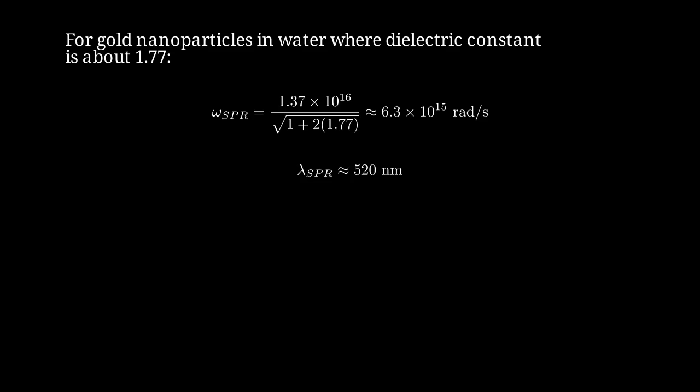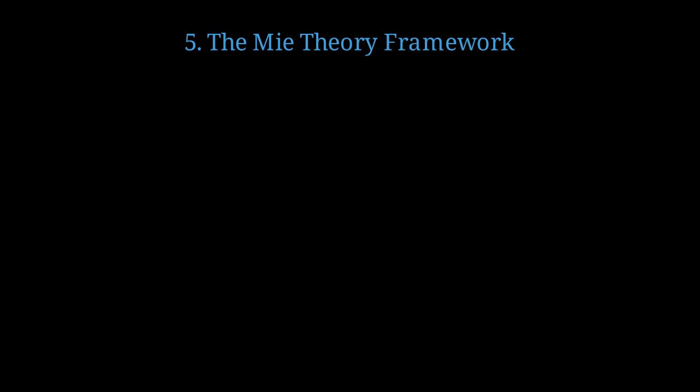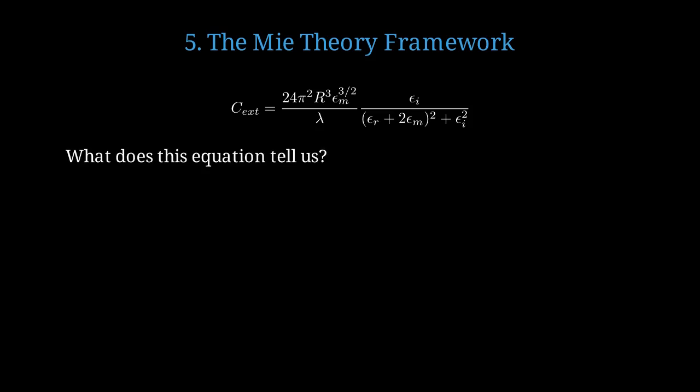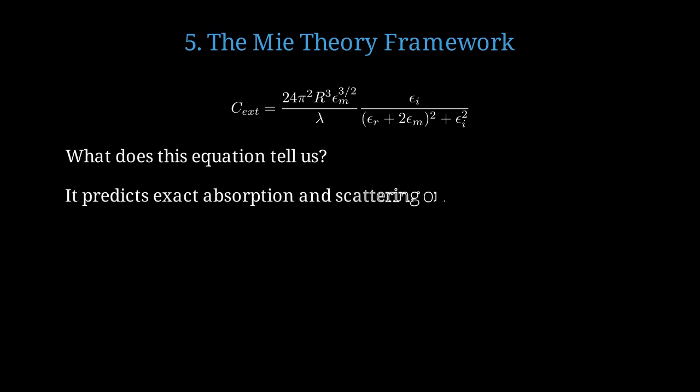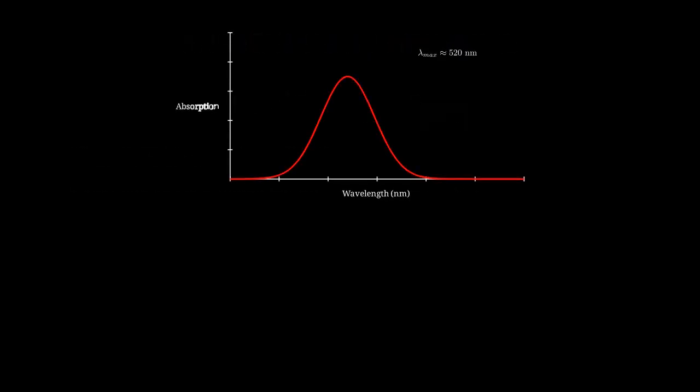This corresponds to a wavelength of about 520 nanometers, which is in the green part of the visible spectrum. This is why gold nanoparticles can appear red or purple: they strongly absorb green light. The complete mathematical description comes from Mie theory, developed by Gustav Mie in 1908. The extinction cross-section C-ext is given by an expression involving the particle radius r, the wavelength lambda, and the real and imaginary parts of the dielectric function epsilon r and epsilon i. Here's a typical absorption spectrum for gold nanoparticles, showing a strong peak around 520 nanometers — the signature of surface plasmon resonance.